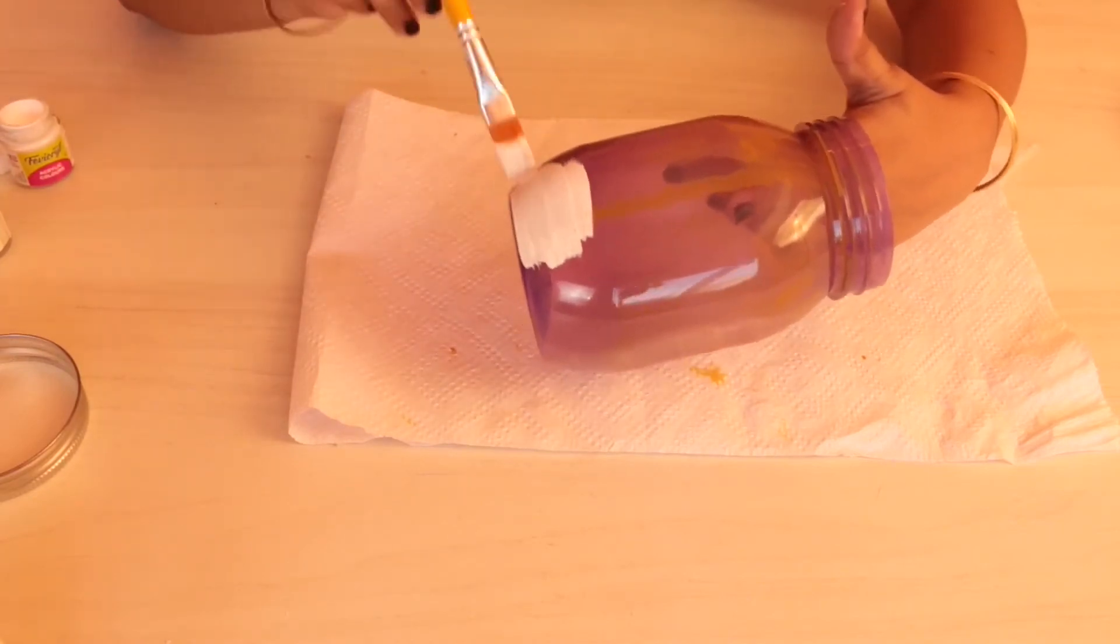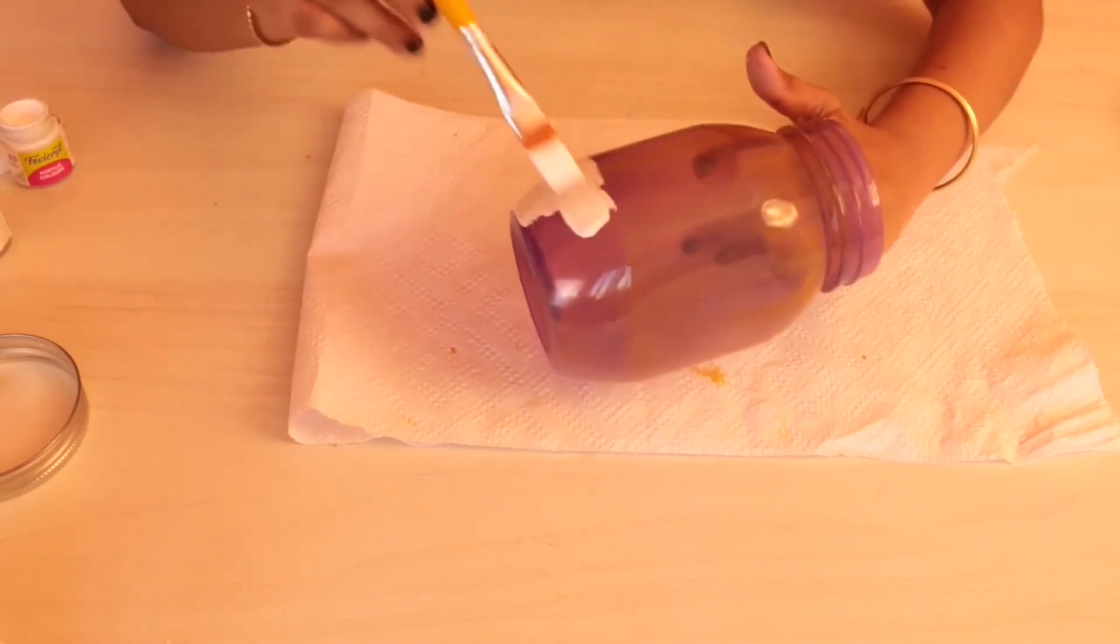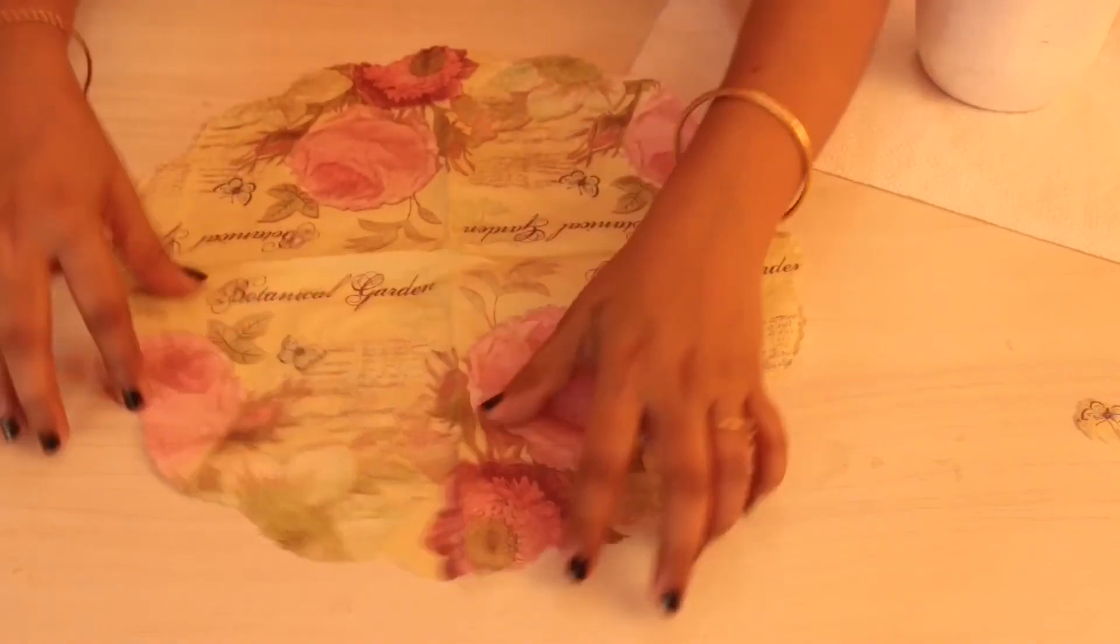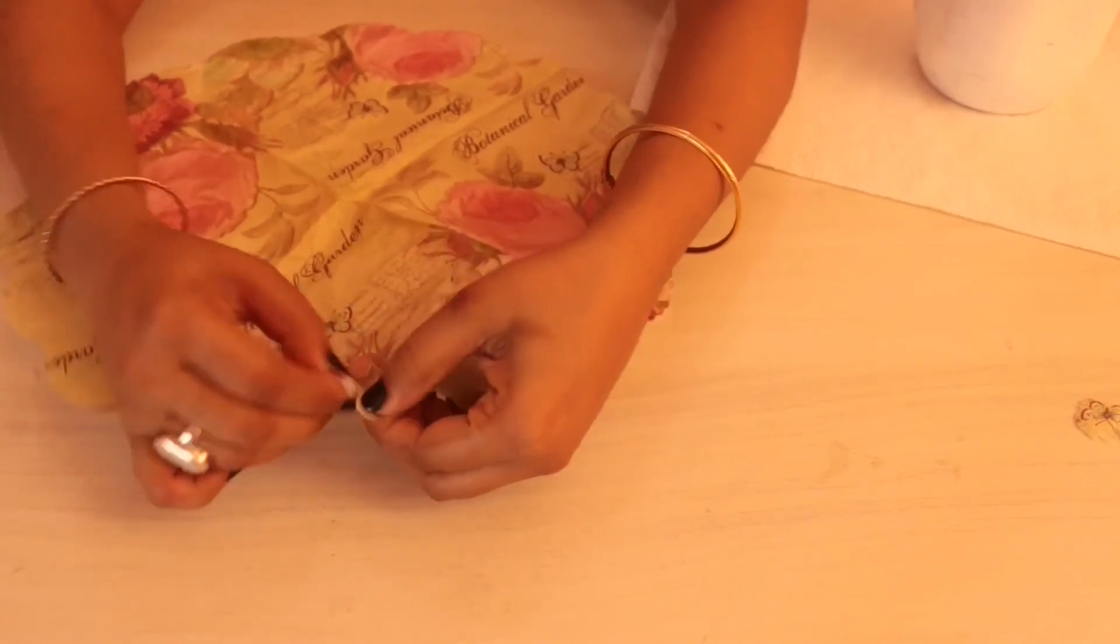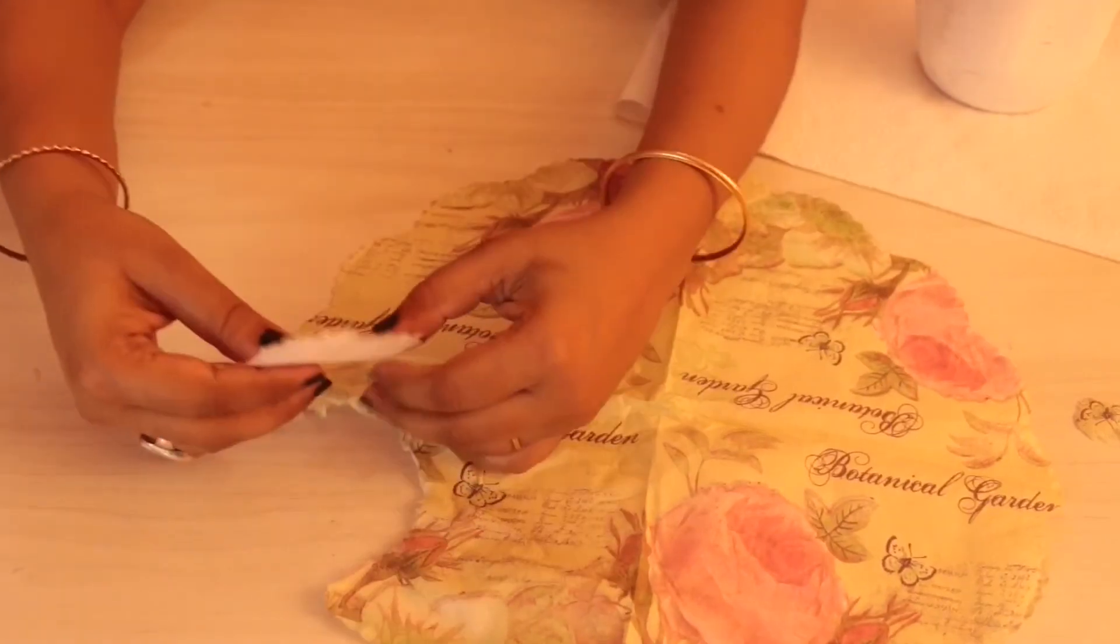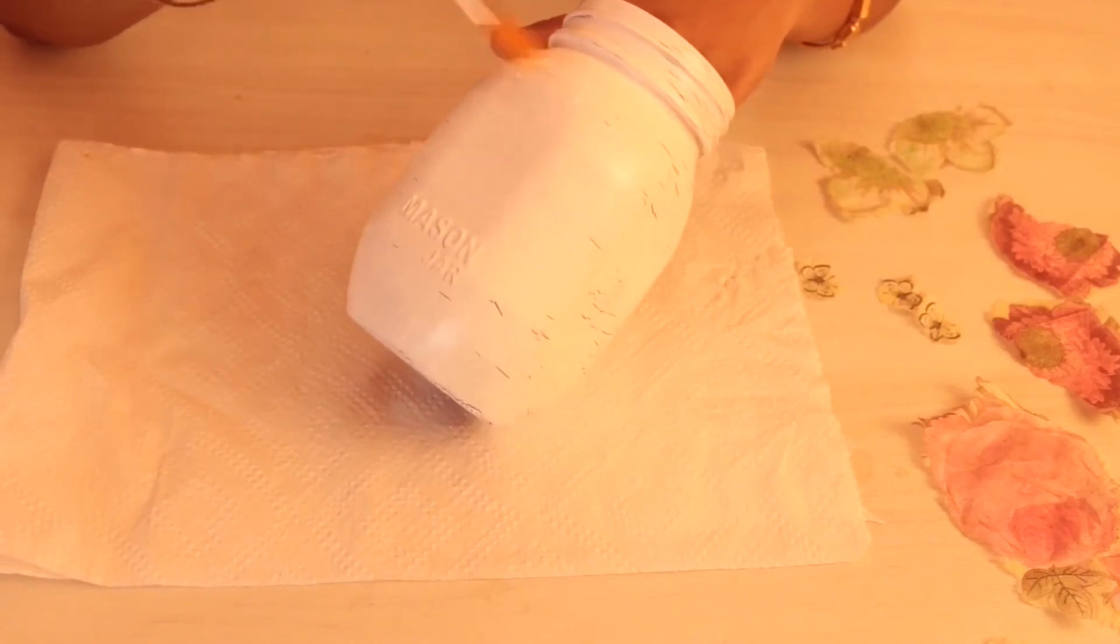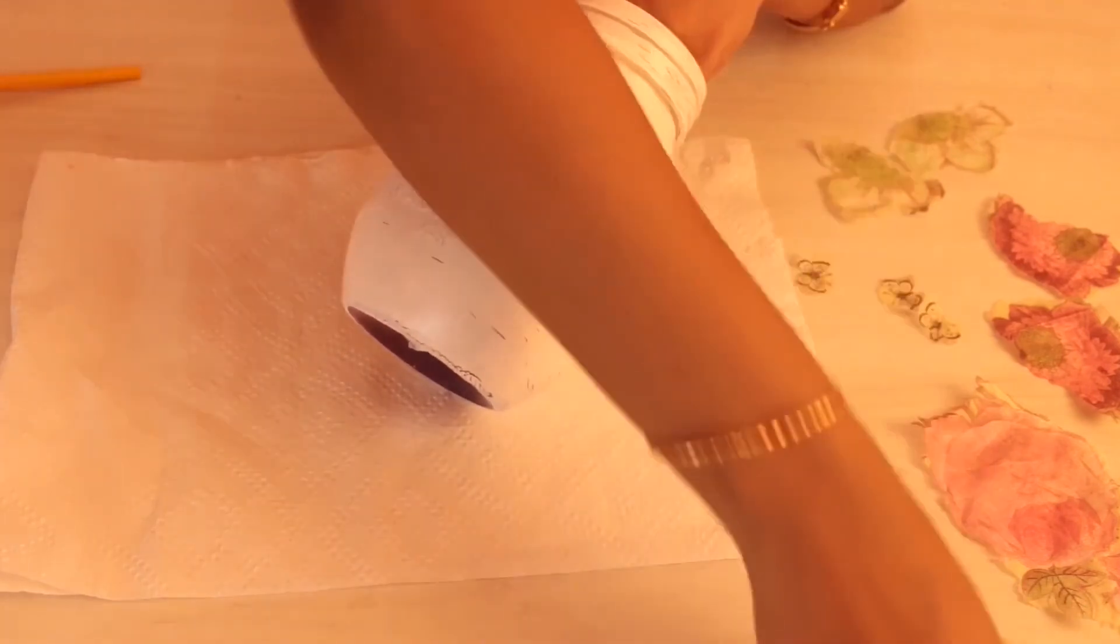Let the primer dry and then apply two coats of acrylic paint. Next, I am going to roughly tear the flowers off from this tissue paper. The next step would be to glue the flowers on the jar. Start by applying glue on the jar and then put these flowers on it.